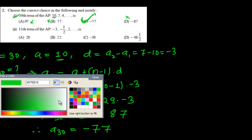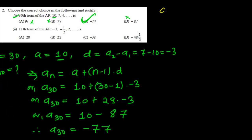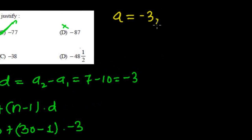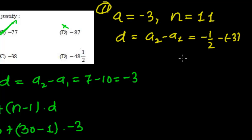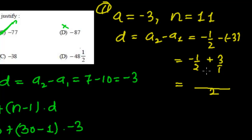So what we have got here: the first term is negative 3, and n equals 11 because we need the 11th term. The common difference: a2 minus a1, that is negative half minus negative 3, which is negative half plus 3. Taking LCM as 2, that gives us negative 1 plus 6 over 2, so common difference d equals 5 over 2.